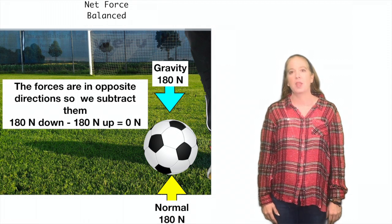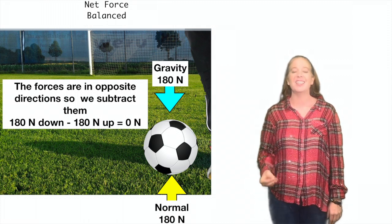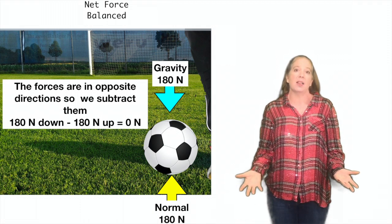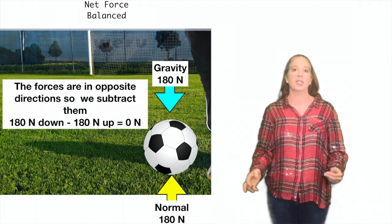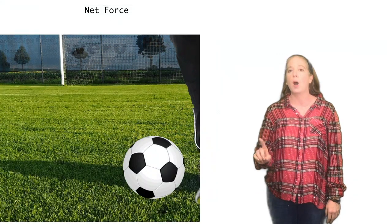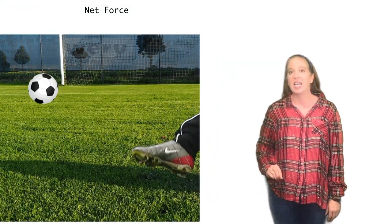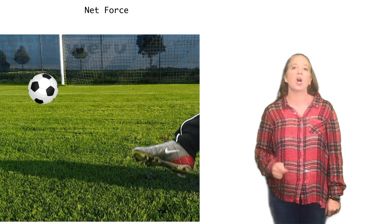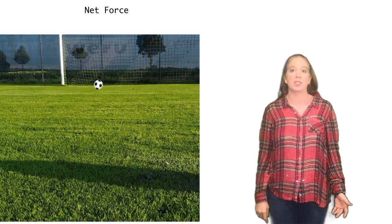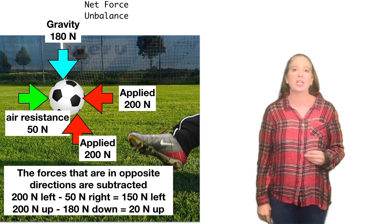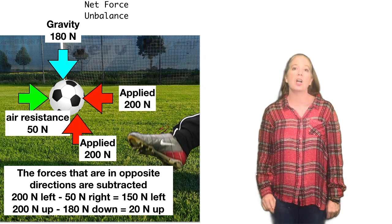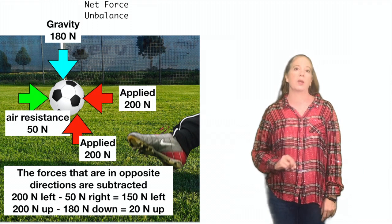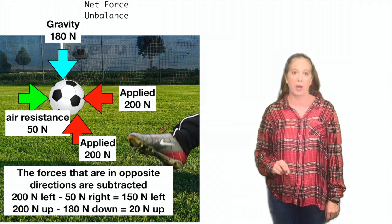Let's look again at that soccer ball. Before it's kicked, it has a net force of zero. All the forces acting on it are balanced, and so the soccer ball is just sitting there. Once the soccer ball gets kicked, a new force comes into the equation. This force causes the forces to be unbalanced, and the net force changes. The soccer ball moves to the left and up because there is a greater force in those directions.